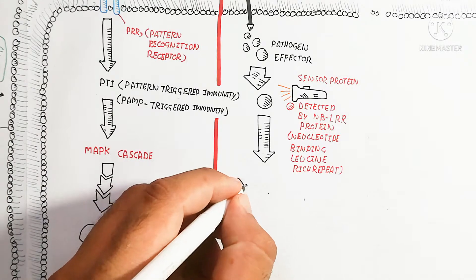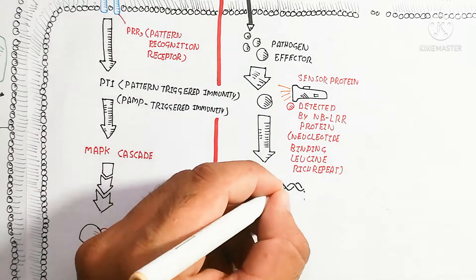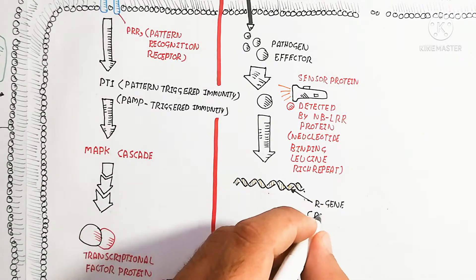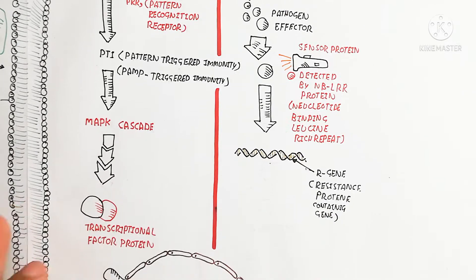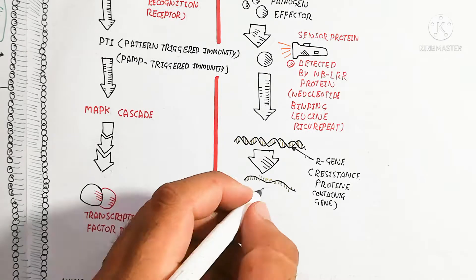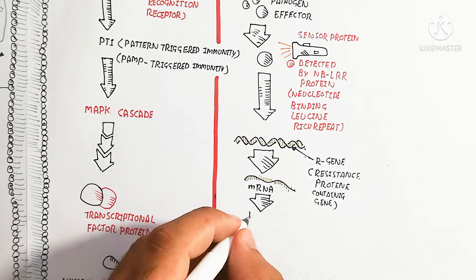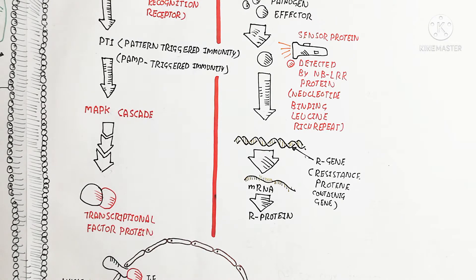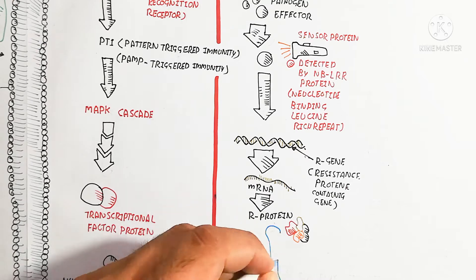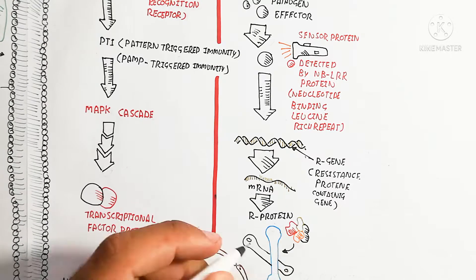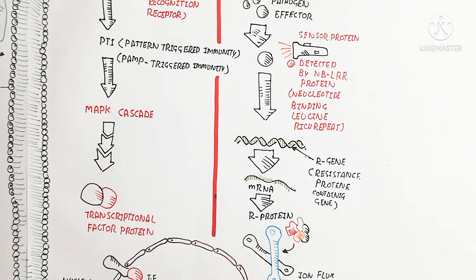The NBS-LRR protein binds with the DNA at the R gene — the resistance protein gene — which is then expressed. It produces messenger RNA, which goes out into the cytoplasm where the ribosome binds and transfer RNA binds to produce R protein made up of amino acids.